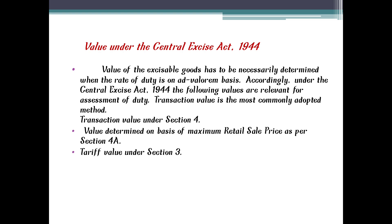Some examples of classification of goods for the purpose of valuation: Section 1 covers animal and dairy products. Section 11 covers textile and textile products. Section 6 deals with chemical products. In this way, the Central Excise Tariff Act classifies the goods, and based on that classification, we proceed with the valuation.